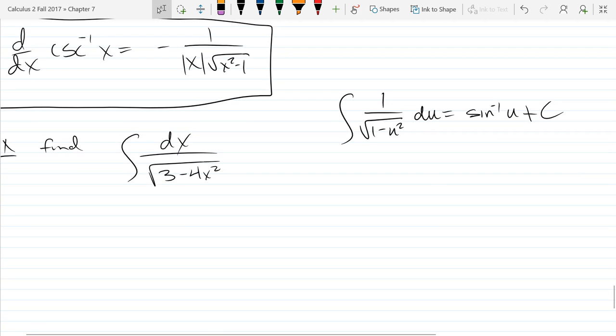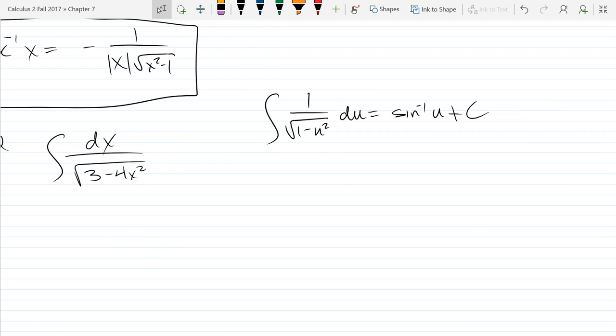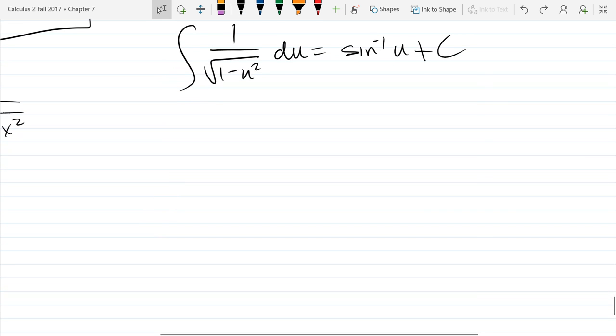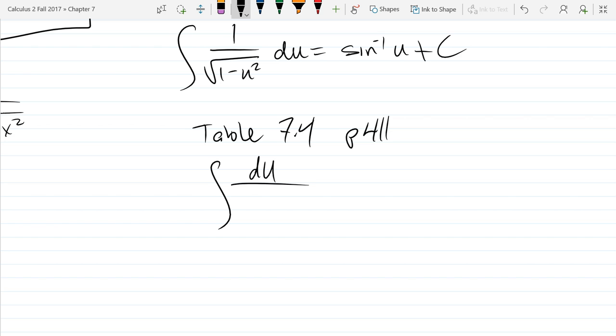All right. I'm going to rewrite. Well, these are going to be slightly different. The difference is instead of one, there's going to be an A there or an A squared. So I'm going to write the three forms from the textbook right here.